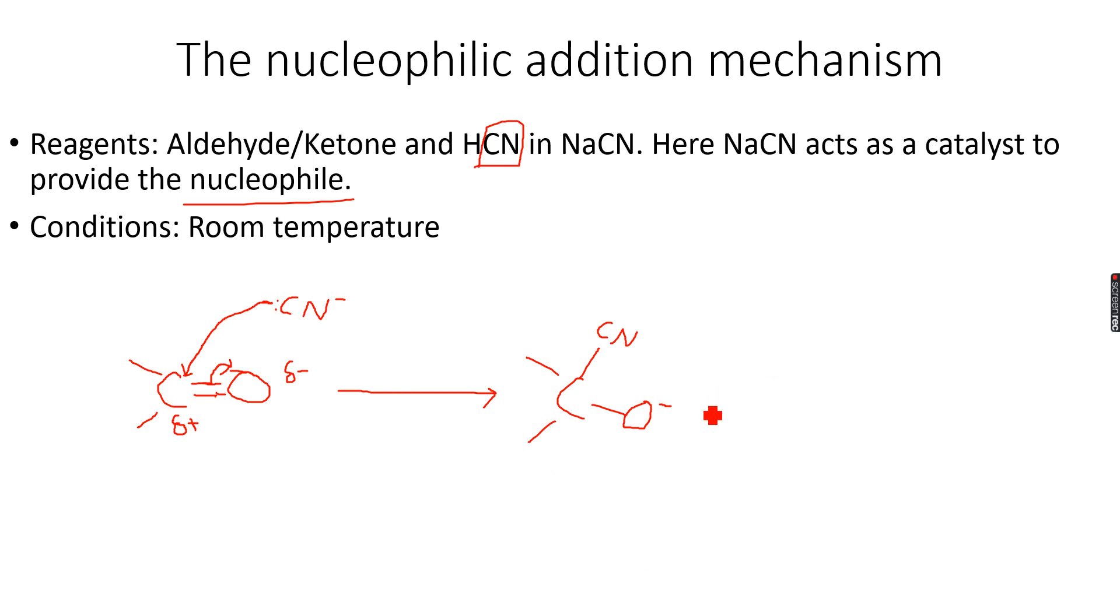If you see that we have HCN, obviously HCN breaks to form H+ and CN-. So we already have an H+ left. Because this oxygen has a negative charge, it attacks this H+ ion.